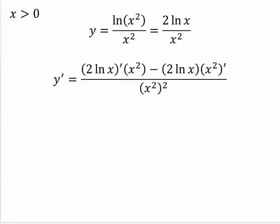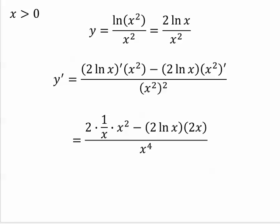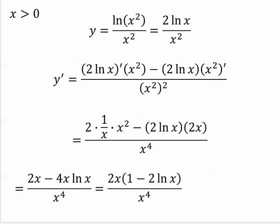Set up your quotient rule. Find your derivatives. And simplify. I pull out a 2x, and then that shows me that I can do a cancellation.